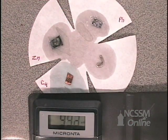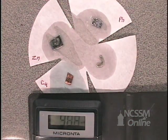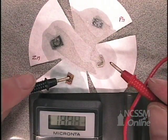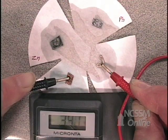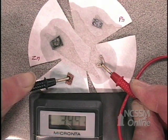Now what I want you to do is to record the voltage with each metal in the series and what color probe is at that metal.